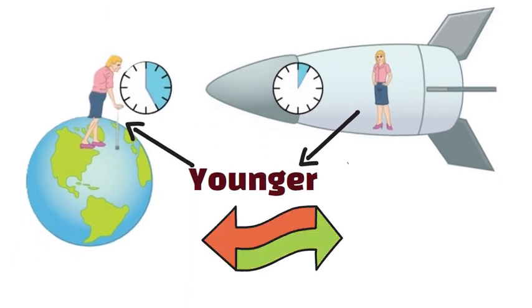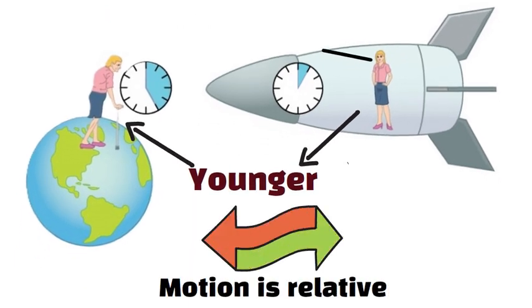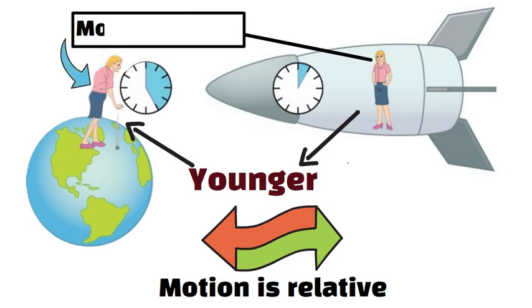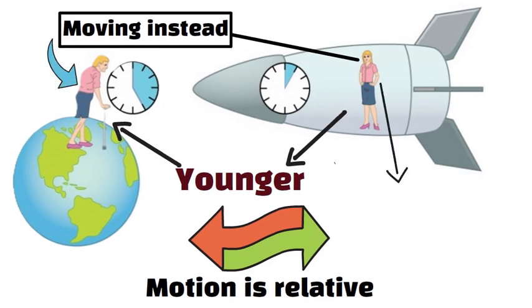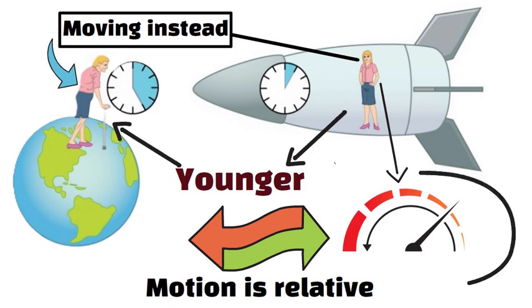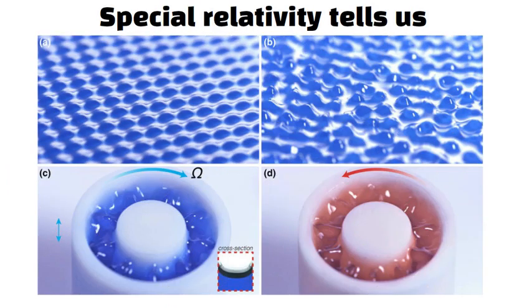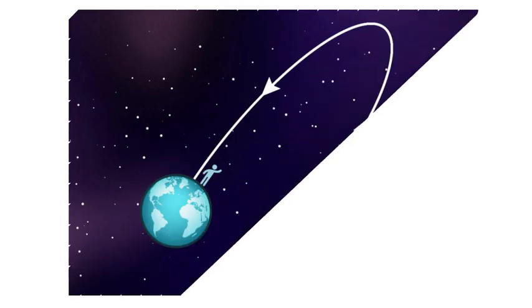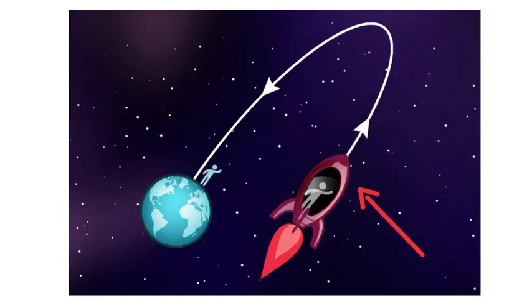This can feel contradictory, since motion is relative. Couldn't the traveling twin claim the home twin was moving instead? The difference is that the traveler undergoes acceleration to turn around. Special Relativity tells us that acceleration breaks the symmetry. Only the traveling twin changes frames, switching direction in space. That's why the stay-at-home twin ages more.